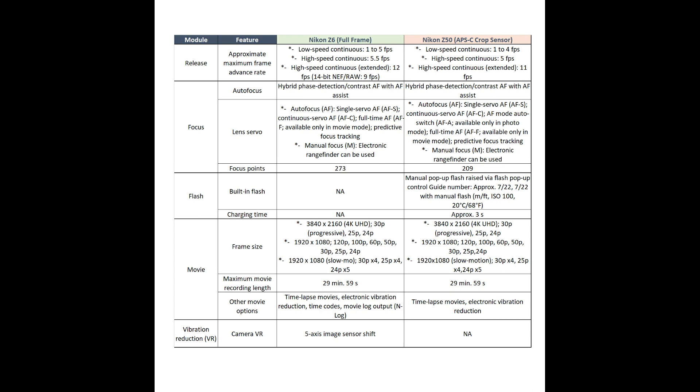The Nikon Z6 is one of the best cameras for videography. Both cameras offer the same frame sizes and both shoot continuously for up to 30 minutes. However, a key difference is that the Nikon Z6 has in-body image stabilization (IBIS), while the Nikon Z50 does not. The Z6 also has more video options overall.